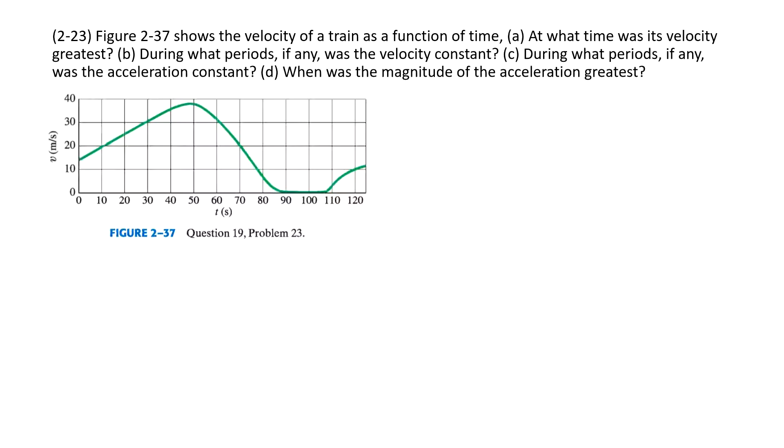Let's talk about problem 23 in chapter 2. In this one, we need to get some quantities from the V-t graph. As we learned in the lecture, in the V-t graph, the slope is acceleration and the displacement is the area under the line.